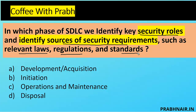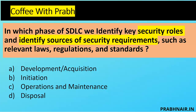The question is specifically talking about identifying security roles and requirements. Option A — Development/Acquisition — is too late; security should be introduced as early as possible. Option D — Disposal — is the finishing stage. Option C — Operation/Maintenance — is where we launch the application. The only close option is Initiation.